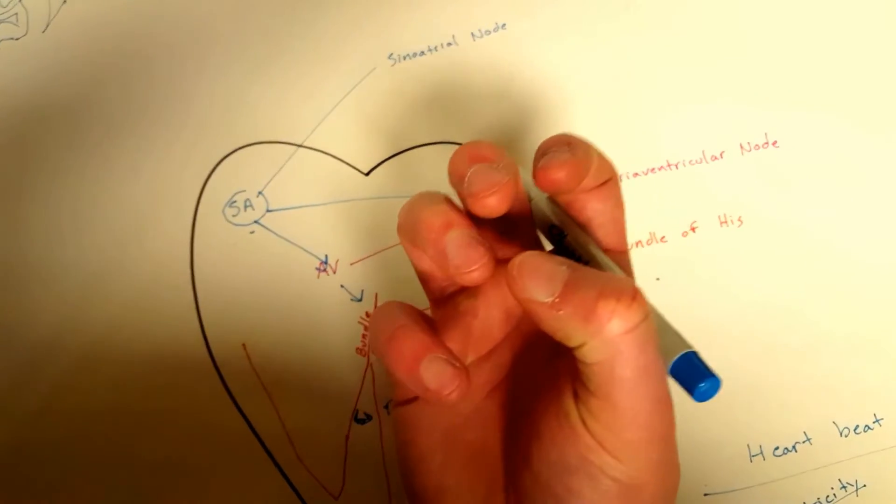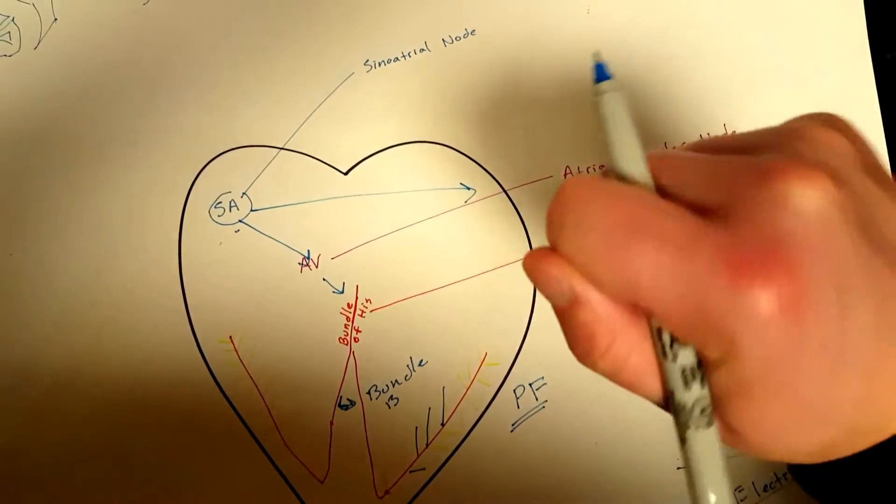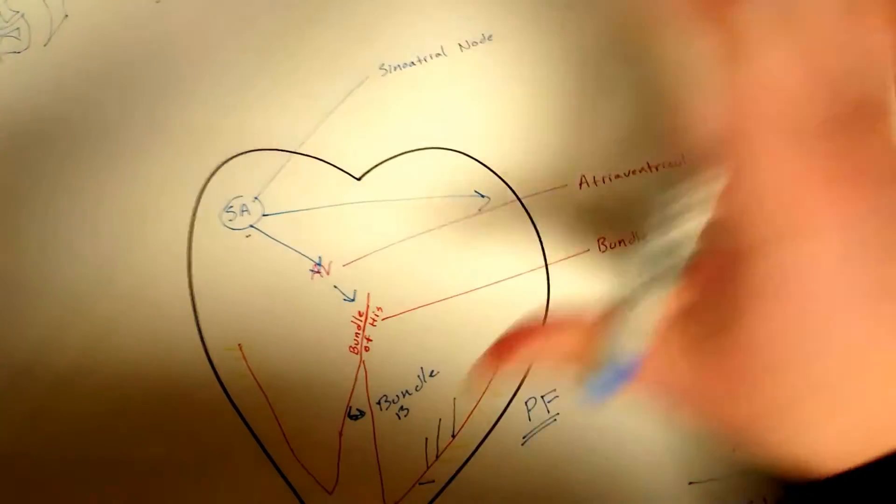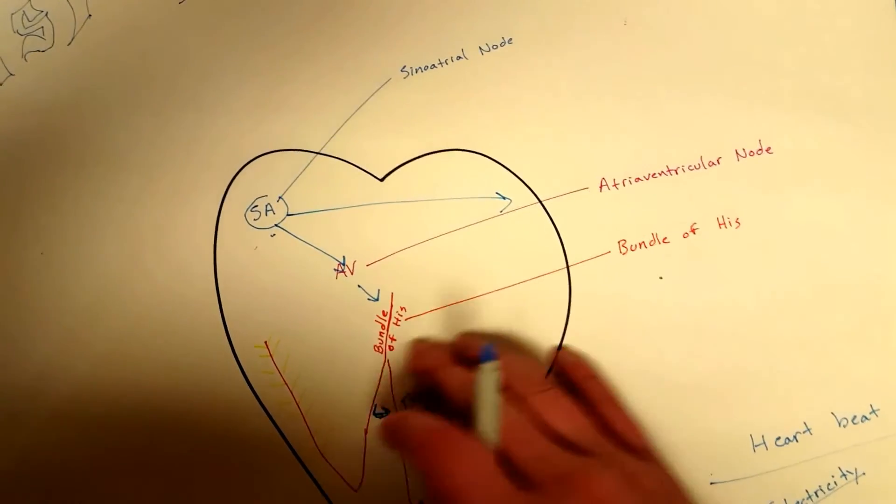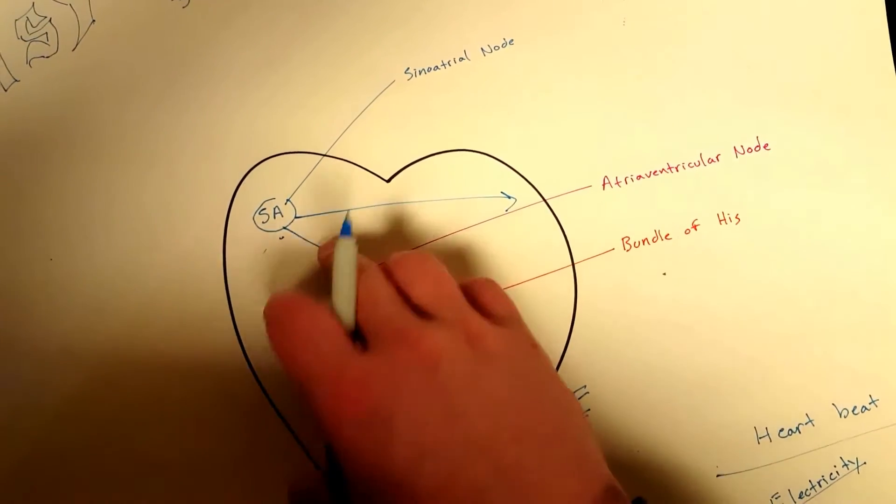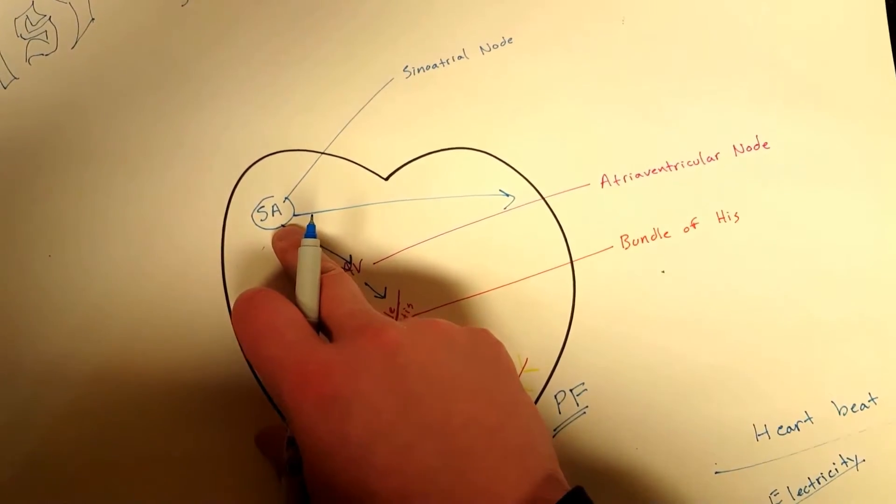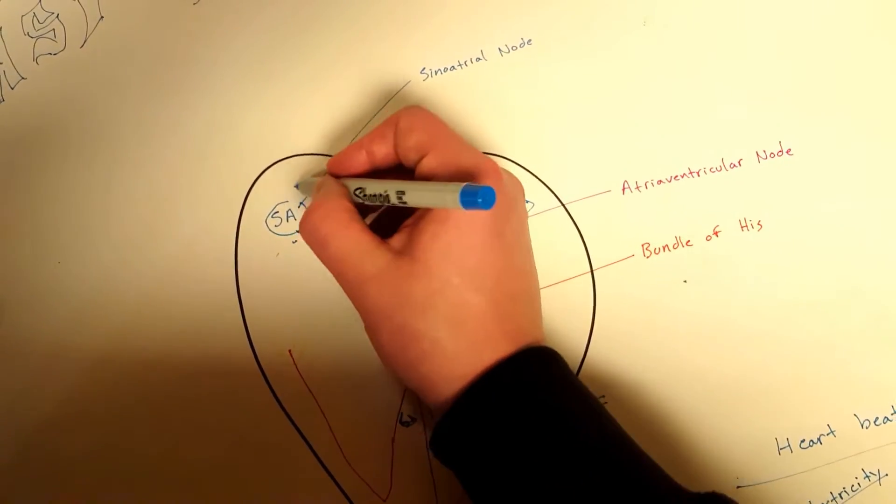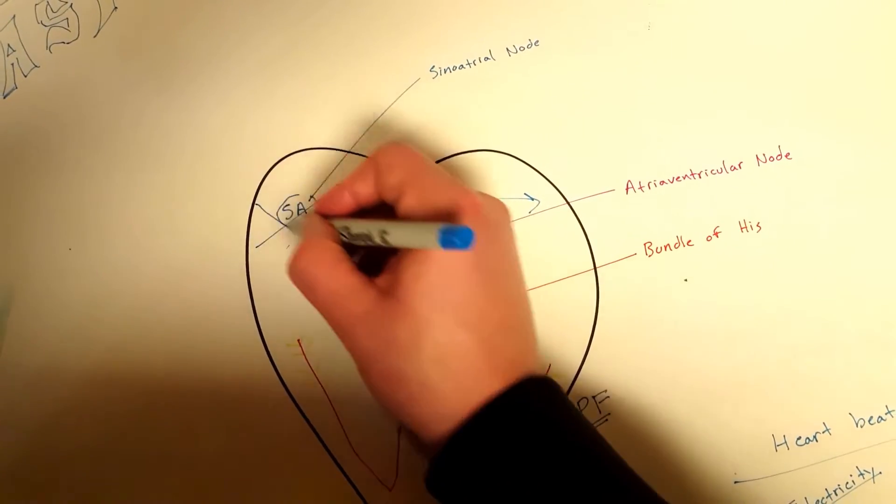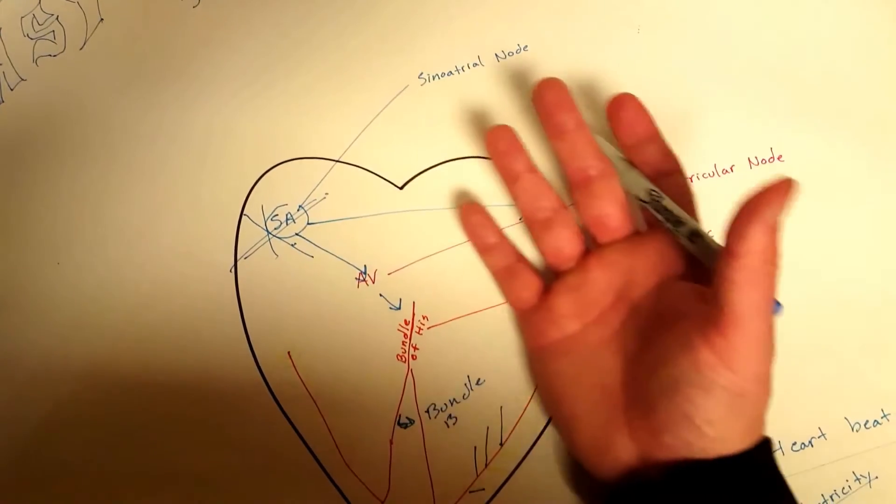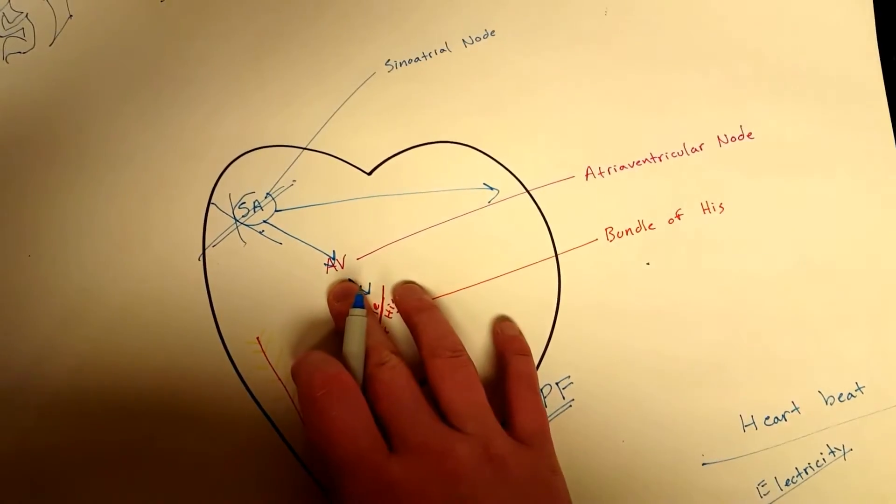It's through electricity. It's like when you turn your car on, the electricity all comes on, then your motor starts to run. That's kind of how this works. Now, let's say your SA node fails. Let's say that you are having tissue death. What's going to happen?